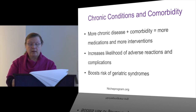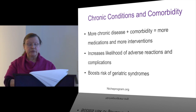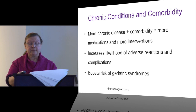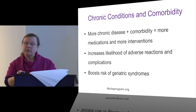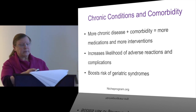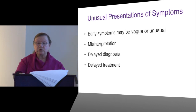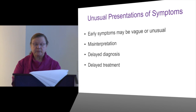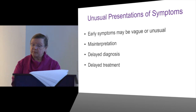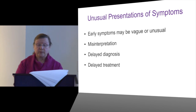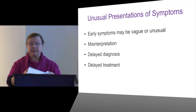The second category is chronic conditions and comorbidity. Because of the high prevalence of chronic disease in older adults, the more chronic diseases they have, the more medications and interventions, which increases the likelihood of an adverse event. Additionally, there are geriatric syndromes to consider. Regarding unusual presentations of symptoms — the symptoms may be very vague or unusual, leading to misinterpretation from the clinician's, family's, or patient's perspective, resulting in delayed diagnosis and treatment.